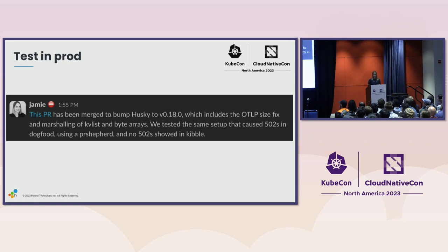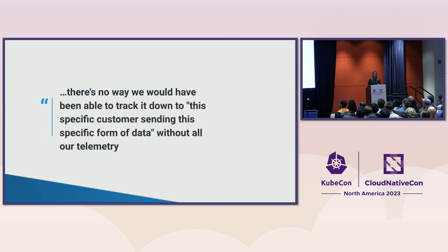One of the quotes I really liked from our incident review was from one of our engineers. He literally said: 'There's no way that we would have been able to track it down to this specific customer sending this specific form of data without all of our telemetry.' And that's important because things will go wrong — but it's about how you can narrow down where those problems are, be able to test that locally, and see that your fixes are going to be good before you get them out to production.